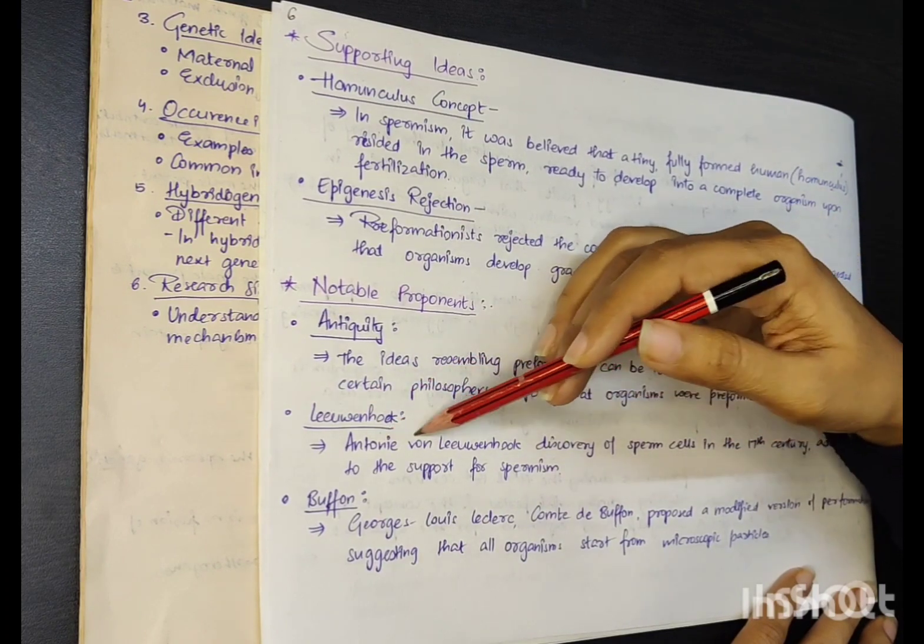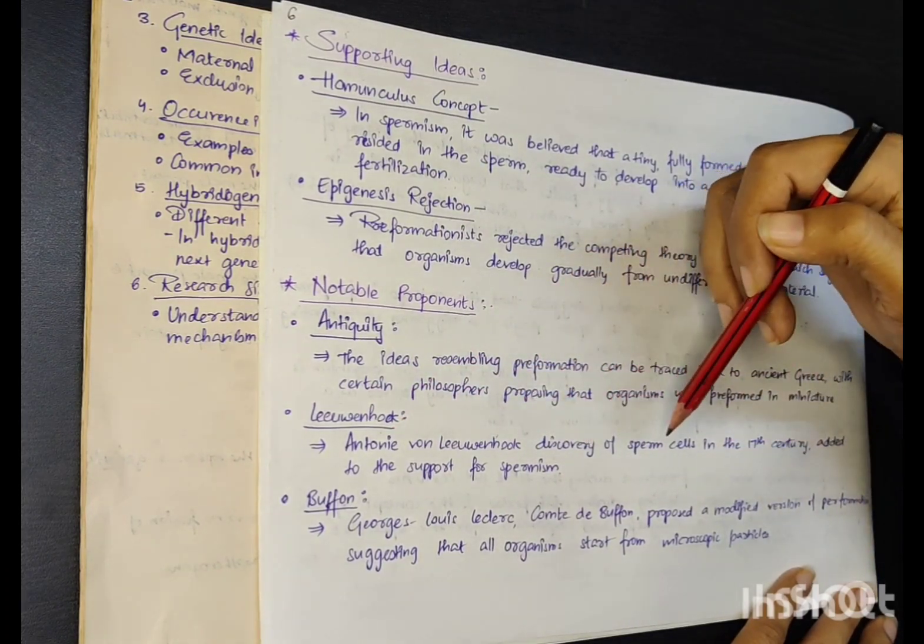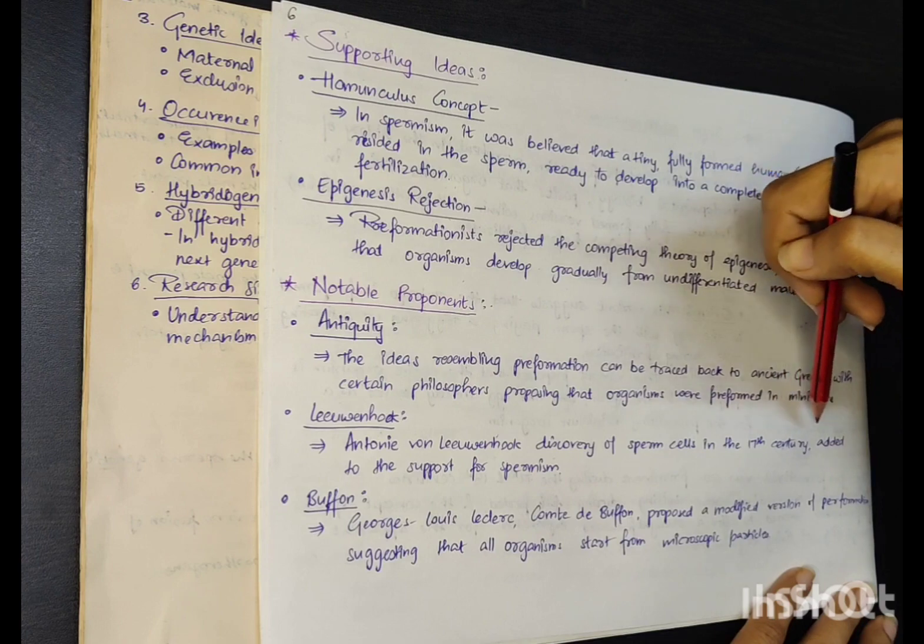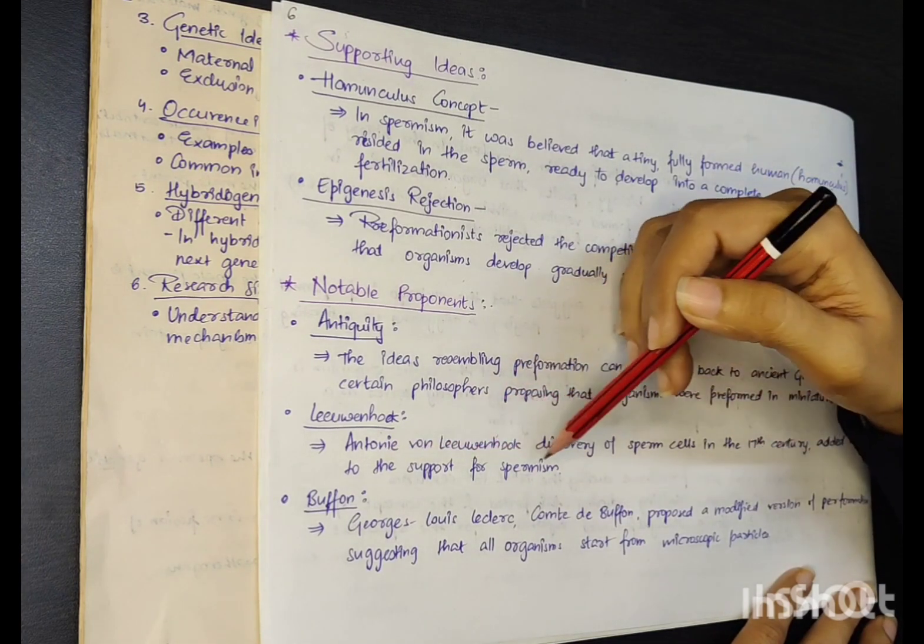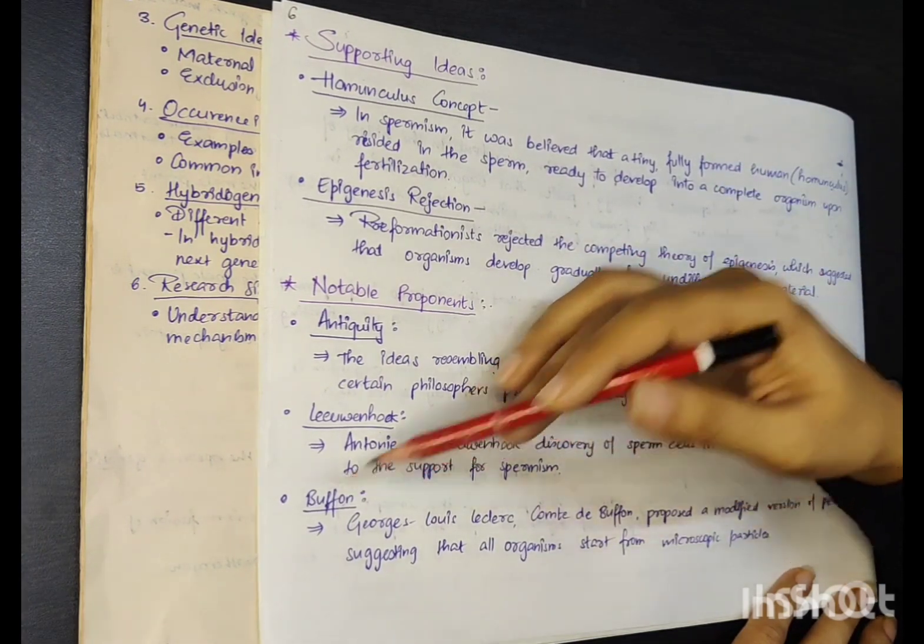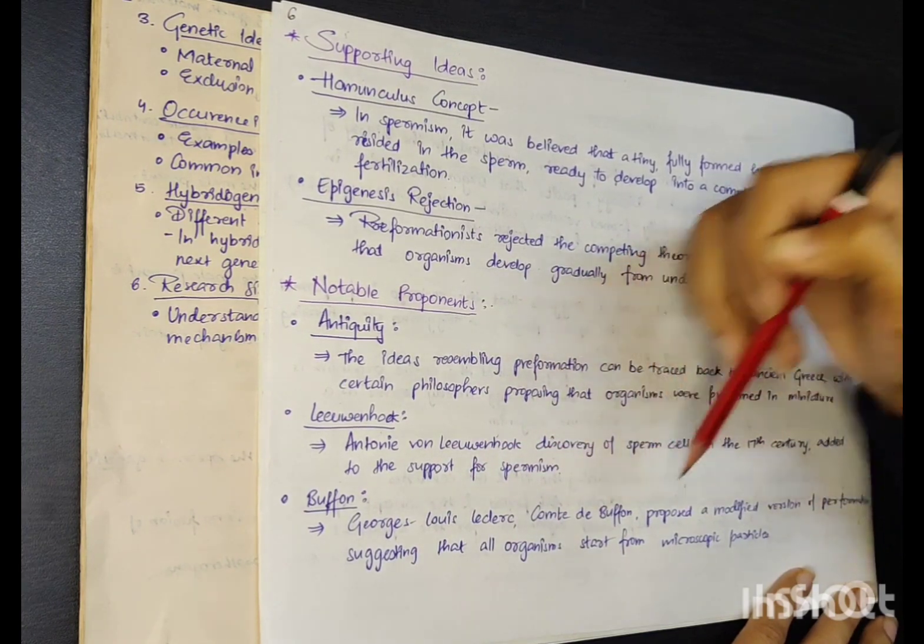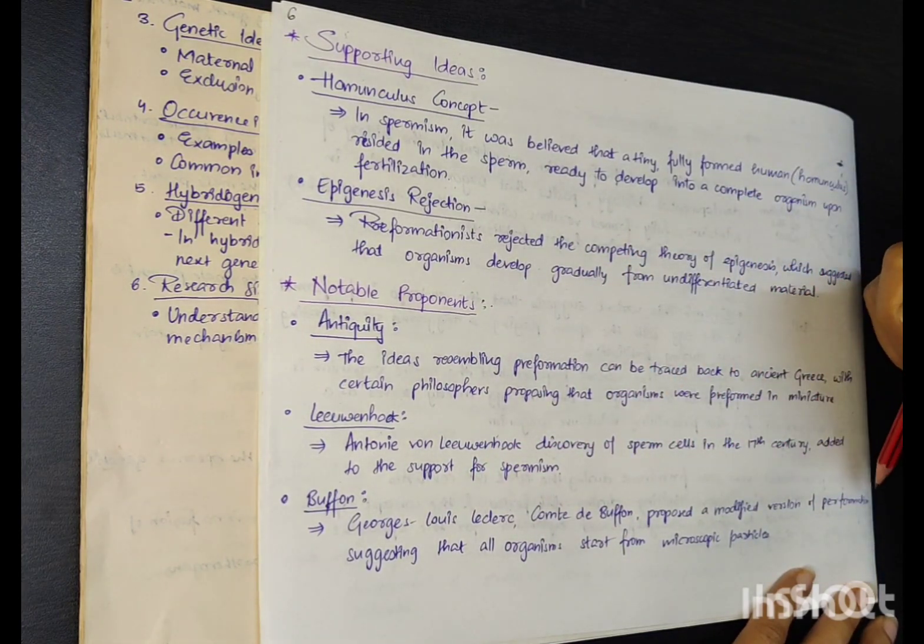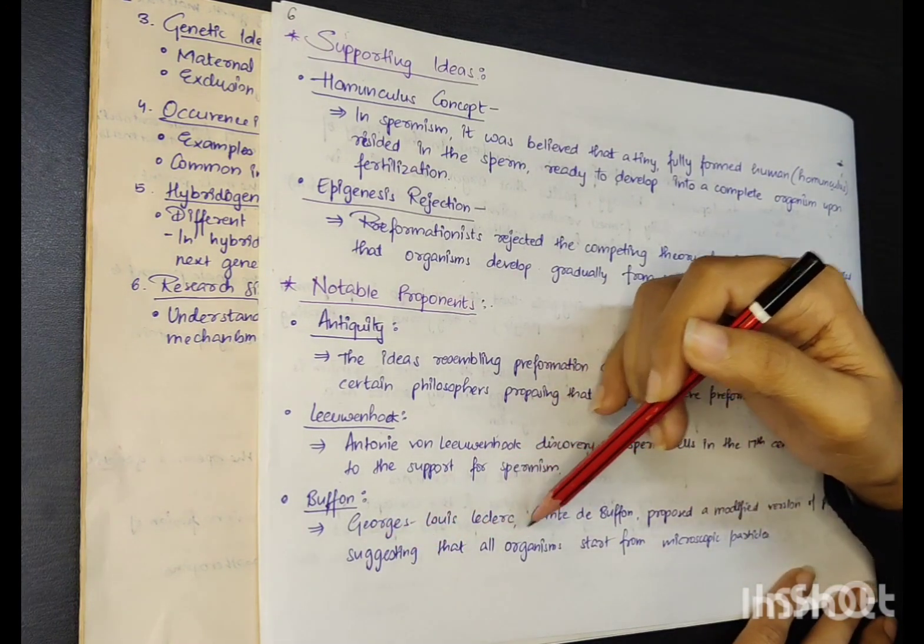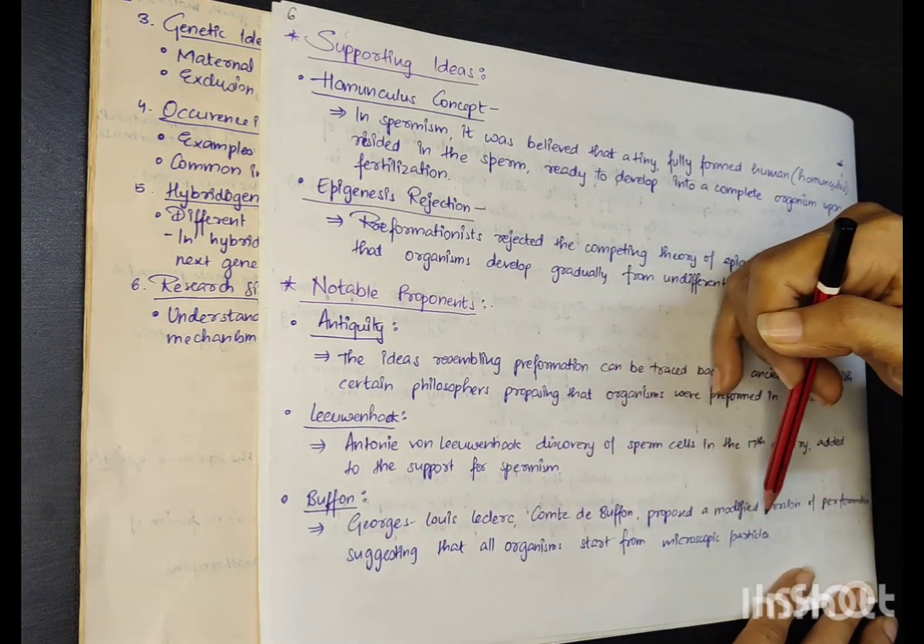Leeuwenhoek: Antony van Leeuwenhoek discovered sperm cells in the 17th century, adding to the support of spermism. Buffon: George-Louis Leclerc, Comte de Buffon, proposed a modified version of pre-formation, suggesting that all organisms start from microscopic particles.